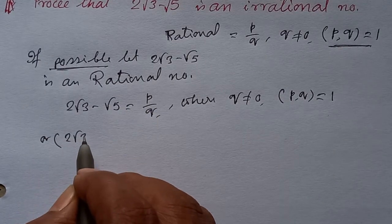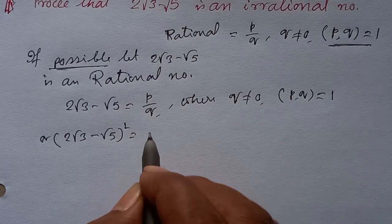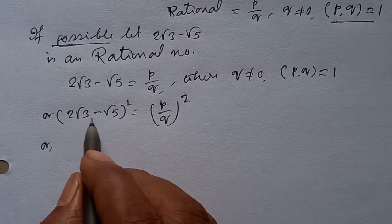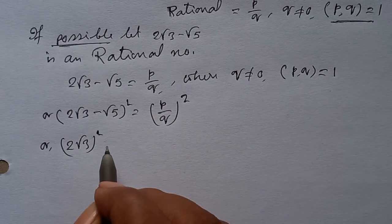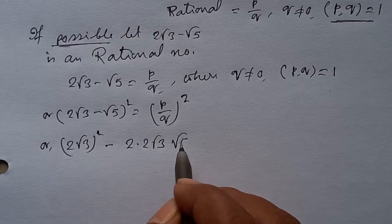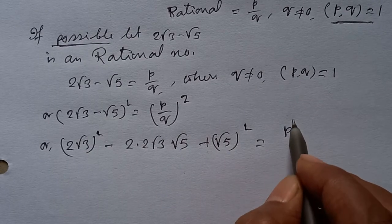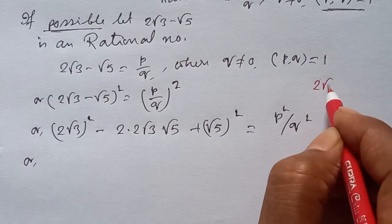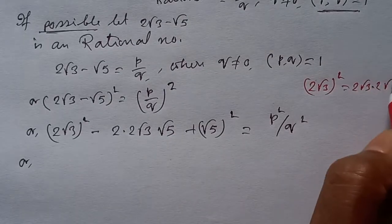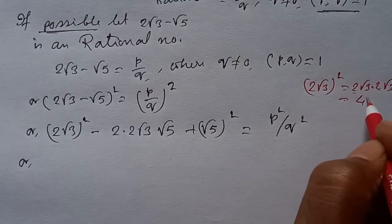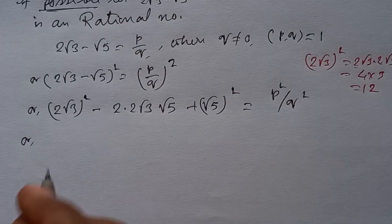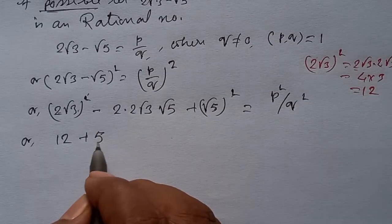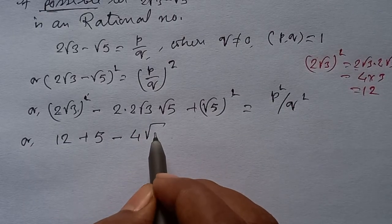(2√3 - √5)² = (p/q)². Using the identity (a - b)² = a² - 2ab + b², we get: (2√3)² - 2·(2√3)·(√5) + (√5)² = p²/q². Now (2√3)² = 2·2·√3·√3 = 4·3 = 12, so we have 12 - 4√15 + 5 = p²/q².